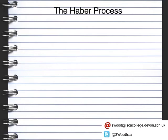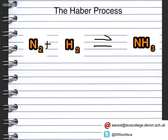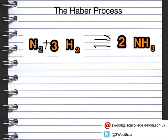The Haber process was developed for the use of explosives. It follows the reaction where we take nitrogen, add some hydrogen, and end up making ammonia. It's a reversible reaction, and the balanced equation requires three lots of hydrogen to make two lots of ammonia.